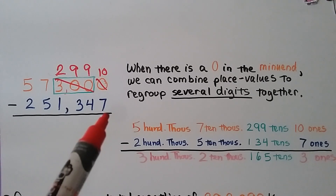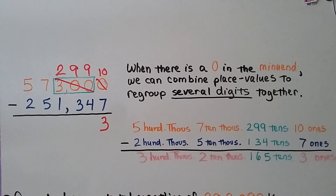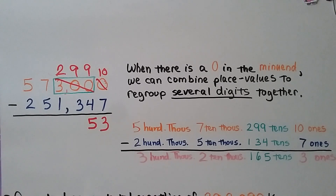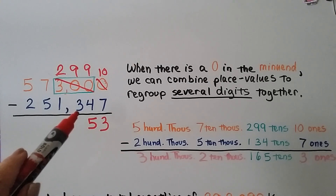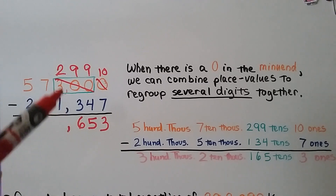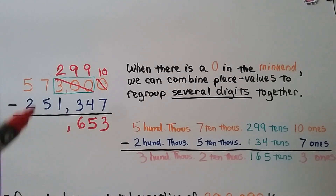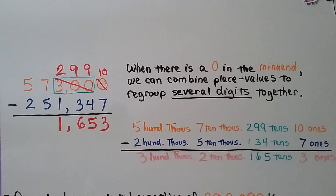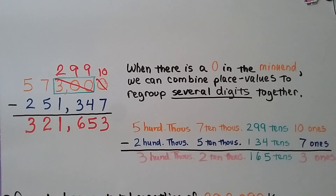Now we can do 10 minus 7, which is 3. 9 minus 4, which is 5. 9 minus 3, which equals 6. We make sure our comma is lined up in our answer. 2 minus 1 is 1. 7 minus 5 is equal to 2. And 5 minus 2 is equal to 3. Our difference is 321,653.